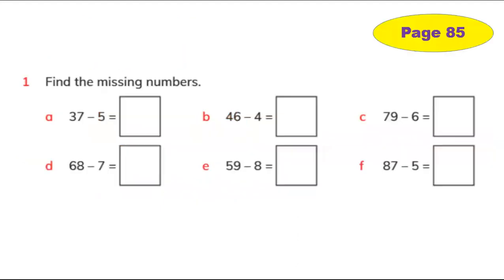Let's begin with page 85. Can you see page 85? We're going to start with question 1: find the missing numbers. Here is the box — we have to find the missing numbers with the two given numbers. Here is 37 and here is 5. Let me show you an example.